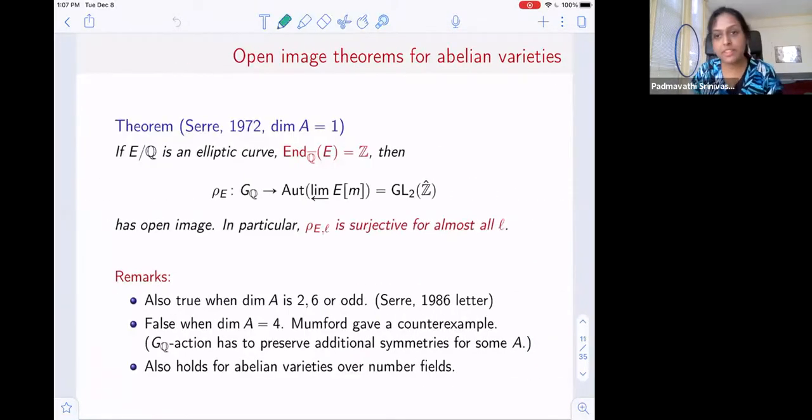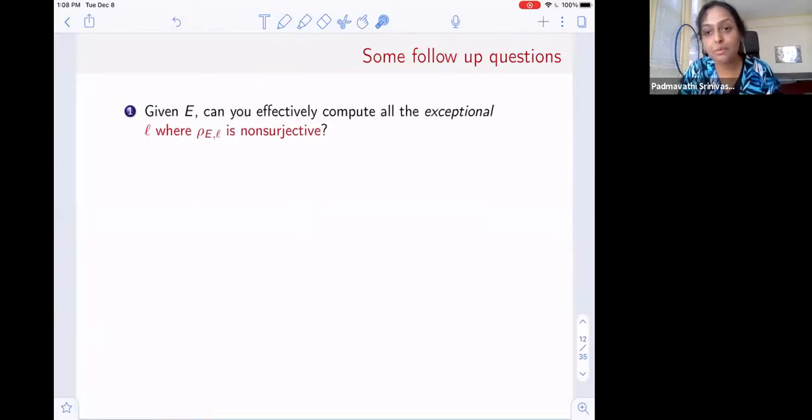What's important is a consequence of this theorem. What we're going to be focusing on is the mod L image. One consequence of the open image theorem is that if you take this representation and you compose this with the projection to Z mod LZ. In the case of elliptic curves, I'll denote this rho_E,L. One consequence of the open image theorem is that this rho_E,L is surjective for almost all L. And by almost all L, I mean all but finitely many L.